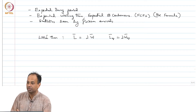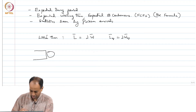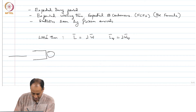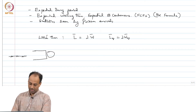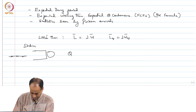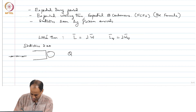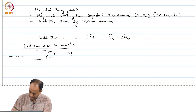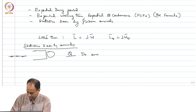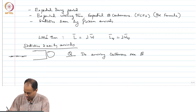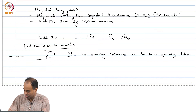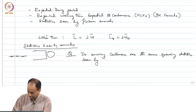The key issue here is the statistics seen by Poisson arrivals. Consider some general single-server queuing system, say a G/G/1 queue, with a renewal arrival process. The question is: do arriving customers see the same queuing statistics as seen by an external observer?